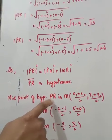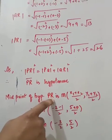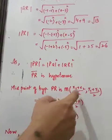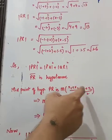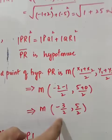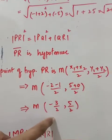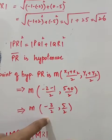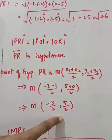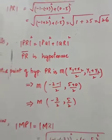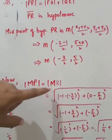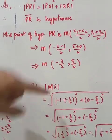x1 y1 aur x2 y2 ki values is formula mein put ki. Values put karne par midpoint M ka answer aata hai: minus 3 by 2 aur 5 by 2. Theek hai. Ab yeh dekhein ki MP is equal to MR hai.